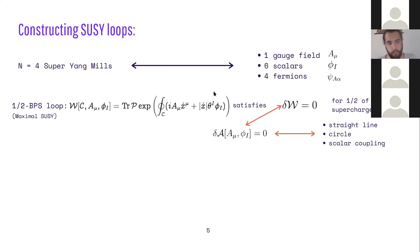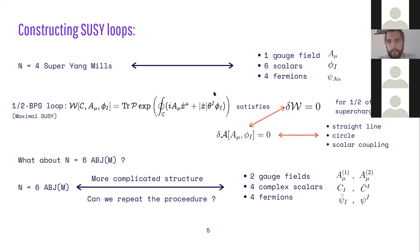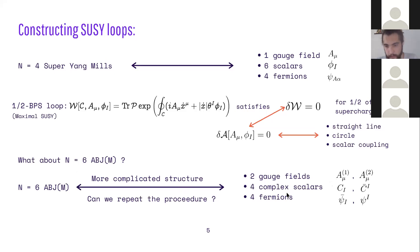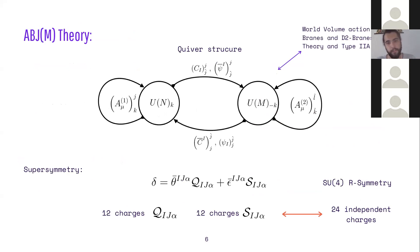We are mostly interested in constructing these operators in the ABJM theory, which is slightly more complicated, having N=6 supersymmetry. It has two gauge fields, each in the adjoint of a U(N) group, four complex scalars, and four fermions. Instead of being in the adjoint, the matter fields transform in the bi-fundamental representation. It is important to consider the quiver structure of ABJM, which is a bookkeeping device telling you how different fields transform under gauge transformations.